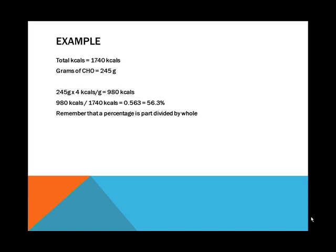For example, with a theoretical total calorie intake of 1,740 calories: if the grams of carbohydrate were 245, we multiply 245 grams times four calories per gram — the gram units cancel out — leaving us with 980 calories from carbohydrates. We then divide 980 by 1,740 and get 0.563. Converting that decimal to a percentage by multiplying by 100 gives us 56.3% of calories coming from carbohydrates.